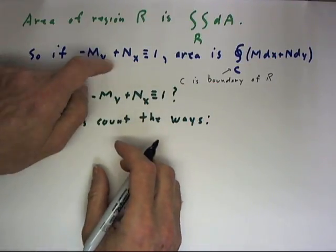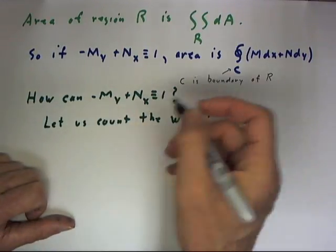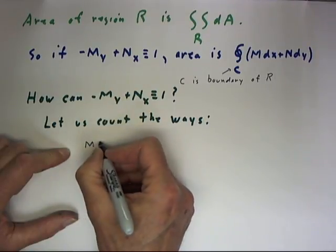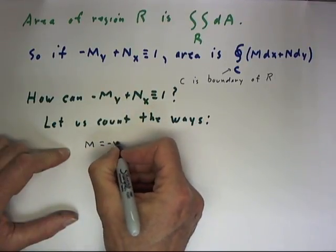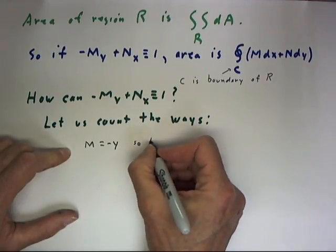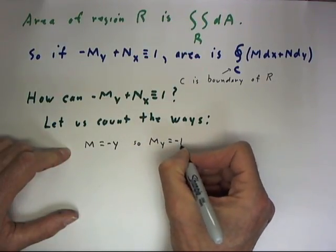How could we get -M_y + N_x identically equal to 1? One way would be let M equal -Y, so M_y equals -1. N equals 0.